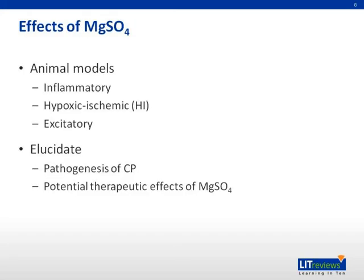Because the exact cause of CP is not known, various animal models have been used to study the therapeutic effect of CP. These include inflammatory, hypoxic ischemic, and excitatory models. The objective of using these animal models is to find out more about the pathogenesis of CP and how magnesium sulfate intervenes in this process to cause a therapeutic effect.